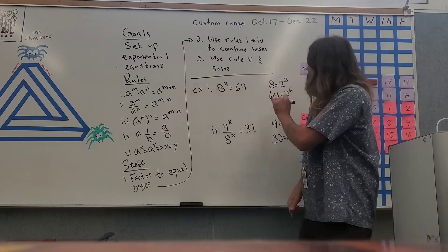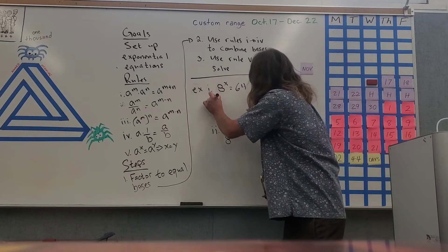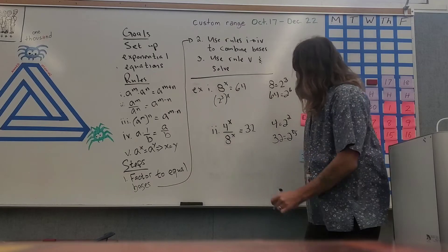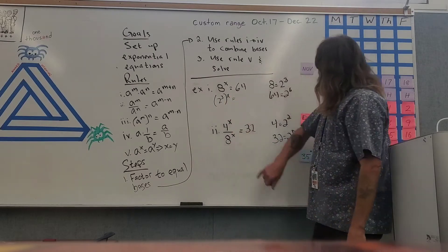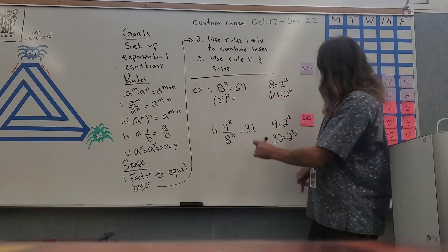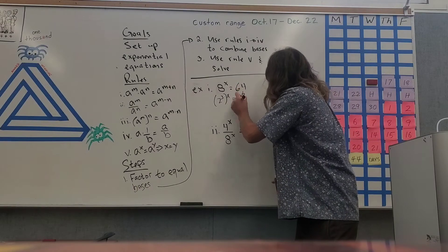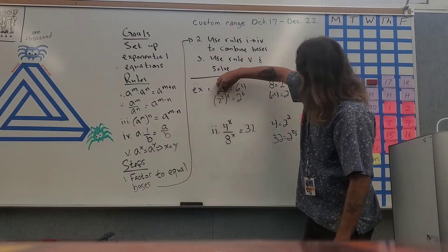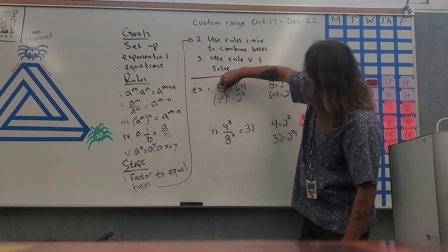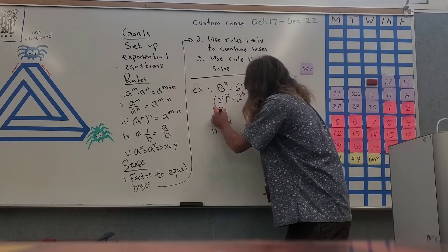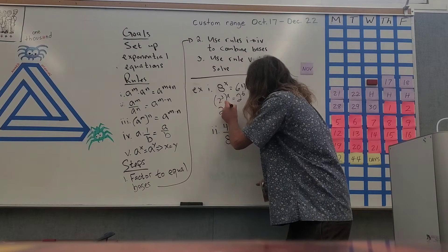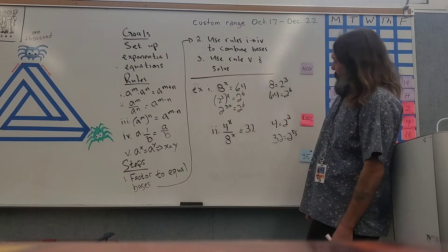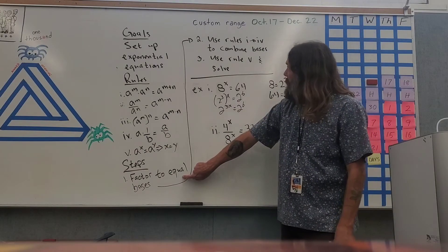Eight turns into two to the third power raised to the power x, and 64 turns into two to the sixth power. I can now use rule three because I have parentheses, so this becomes two to the power of three times x, and that's equal to two to the power of six. So now I have equal bases.